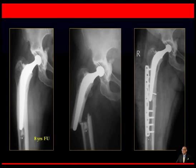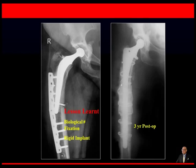Yet another example: a patient who underwent cemented total hip replacement for rheumatoid arthritis with an 8-year follow-up presented with a type B1 fracture. We attempted open reduction and rigid anatomical fixation using a locking compression plate. However, this treatment failed because it was not a biological fixation and the implant itself was very rigid — an important lesson learned. Subsequently, we revised with a longer uncemented stem without changing the cup, and the 3-year follow-up shows an excellent outcome.